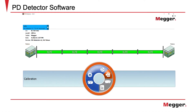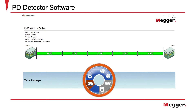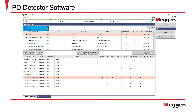To access the report options in the PD Detector software, you must first select the cable and cable manager. Select the cable manager icon in the main menu. Next, select the cable from the list and then select the Show Report button.